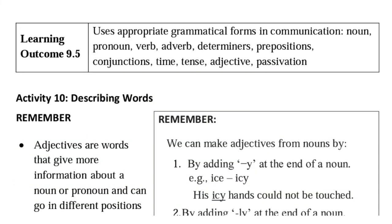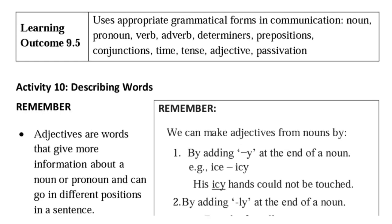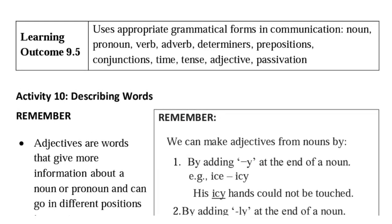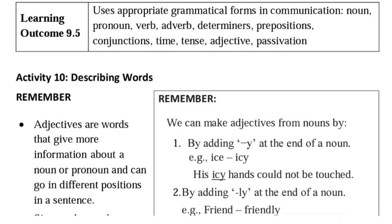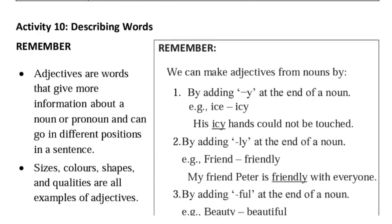Here the learning outcome 9.5: use appropriate grammatical forms in communication like noun, pronoun, verb, adverb and determiner, prepositions, conjunctions, tense, adjective and passivation. Here activity 10 is given: describing words.